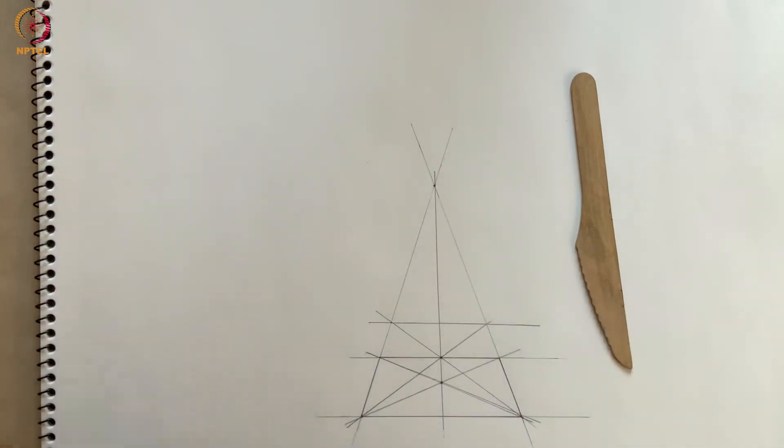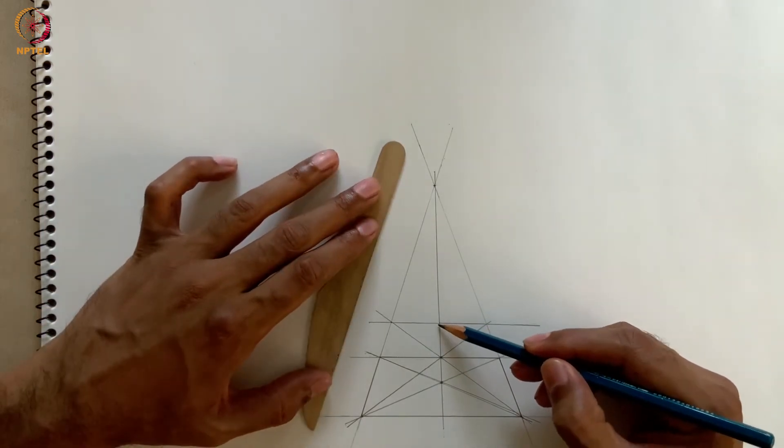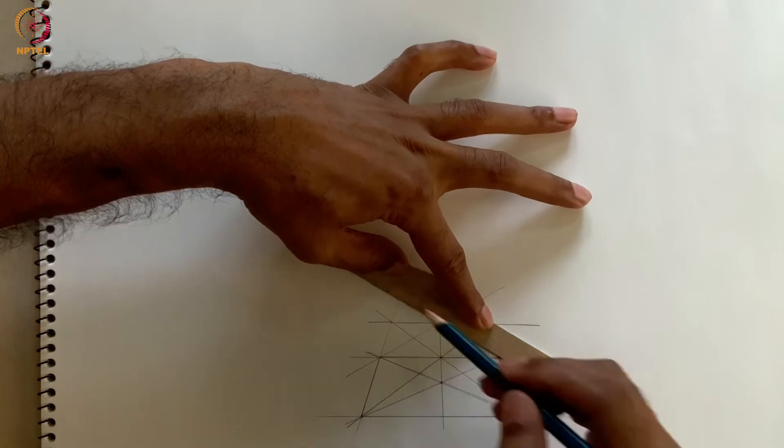Returning to the perspective view, notice that we can continue this process as long as we want and produce evenly spaced railway ties that gradually approach the horizon line.